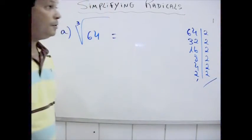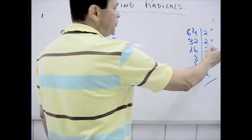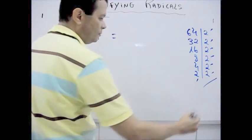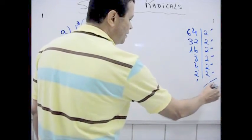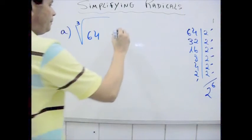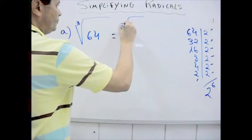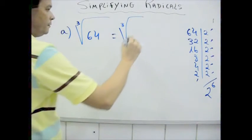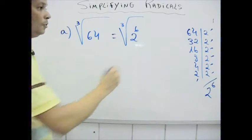Ok, we have here 1, 2, 3, 4, 5, 6, so 2 to the 6th power. I'm going to put here cube root of 2 to the 6th power, right?